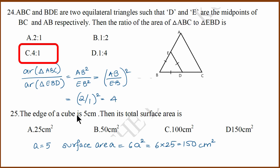Next, edge of the cube is 5 cm. That means the cube side is 5 cm. What is the total surface area? Cube total surface area formula is 6A square. A is 5, which means 6 times 25 is 150 cm squared.